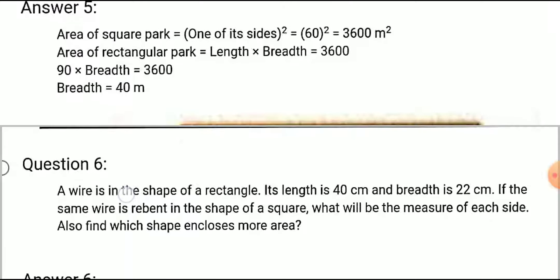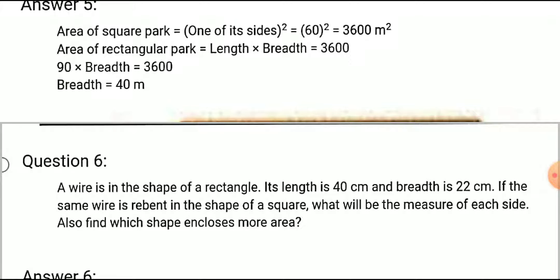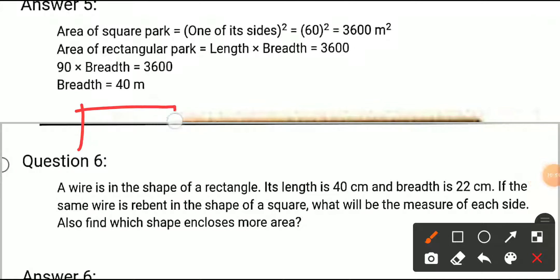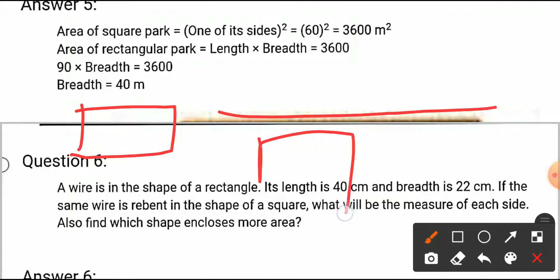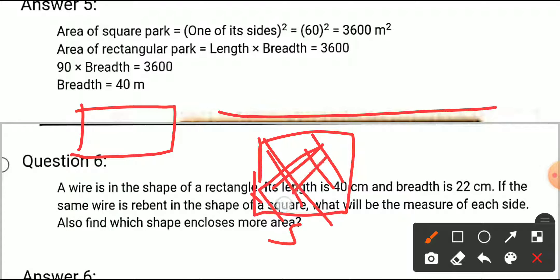Question number six: a wire is in the shape of a rectangle with length 40 cm and breadth 22 cm. The same wire is rebent in the shape of a square. We need to find the measure of each side of the square and the area enclosed. The key concept is that the length of the wire remains the same.